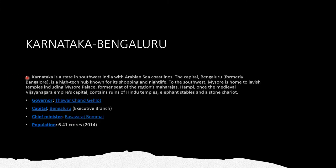The next one is Karnataka; its capital is Bengaluru. Karnataka is a state in southwest India with Arabian Sea coastlines. The capital Bengaluru, formerly Bangalore, is a high-tech hub known for its shopping and nightlife. To the southwest, Mysore is home to lavish temples including Mysore Palace, former seat of the region's Maharajas. Hampi, once the medieval Vijayanagara Empire capital, contains ruins of Hindu temples, elephant stables and a stone chariot. The governor of Karnataka is Thaawarchand Gehlot and its capital is Bengaluru.